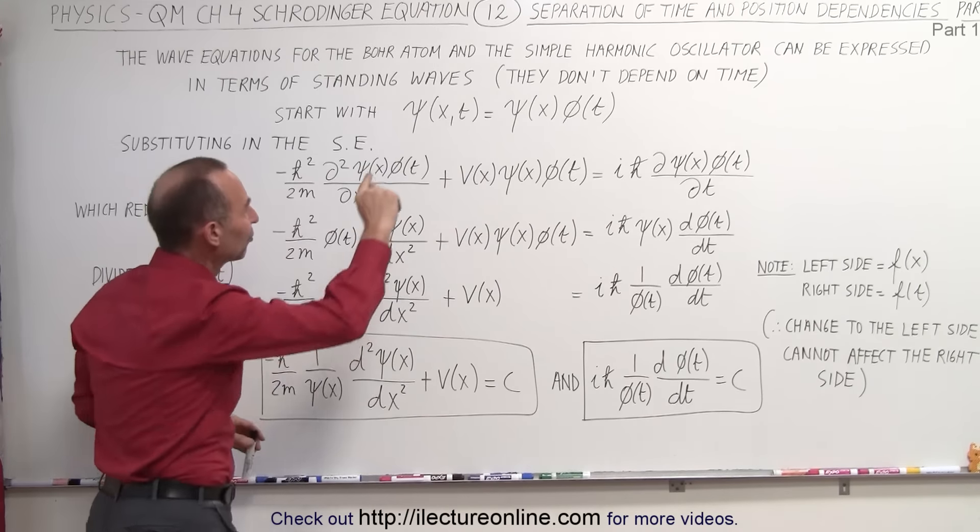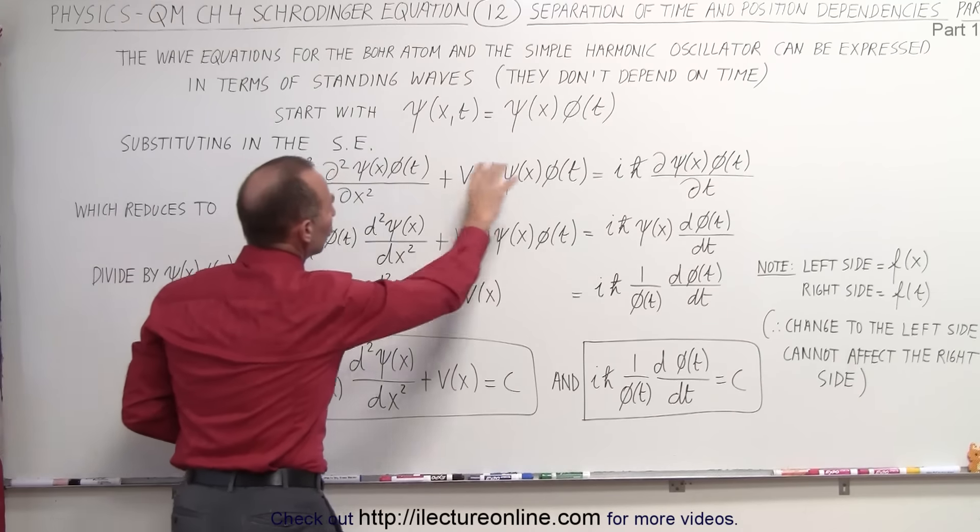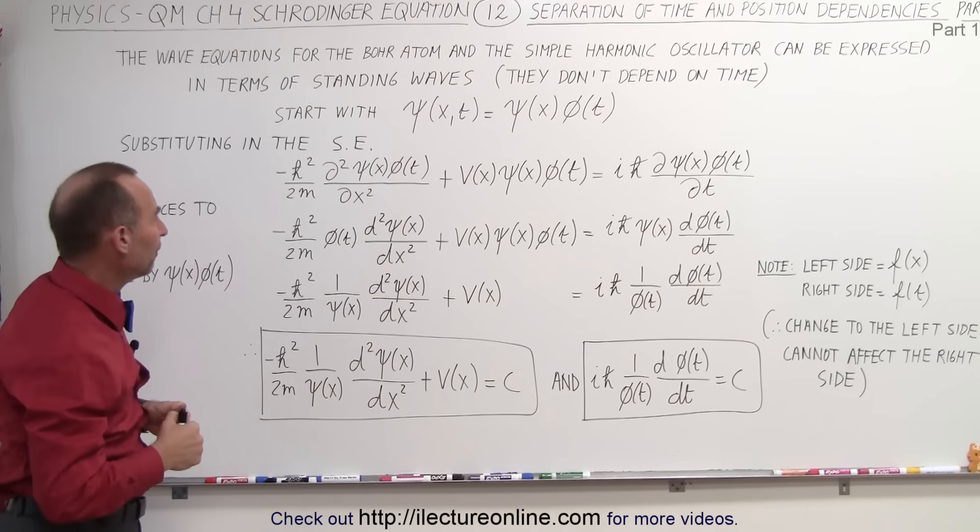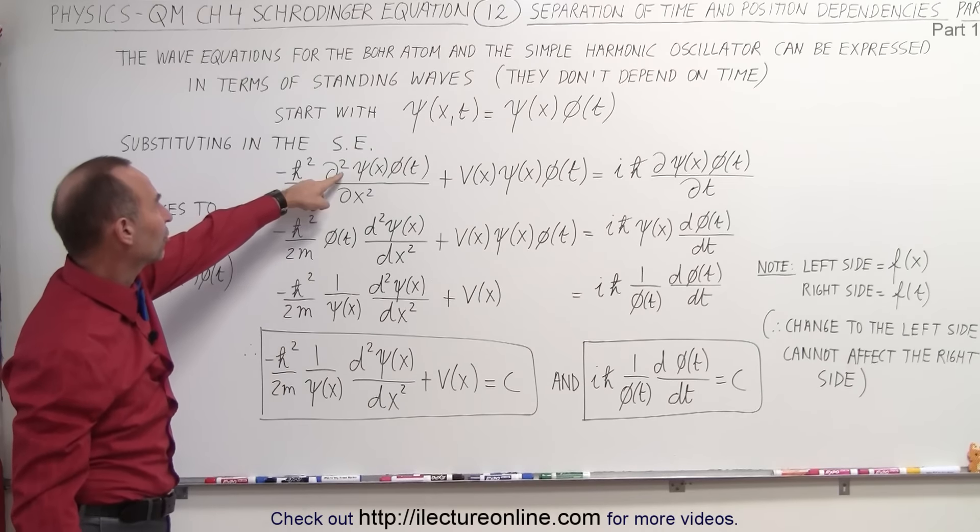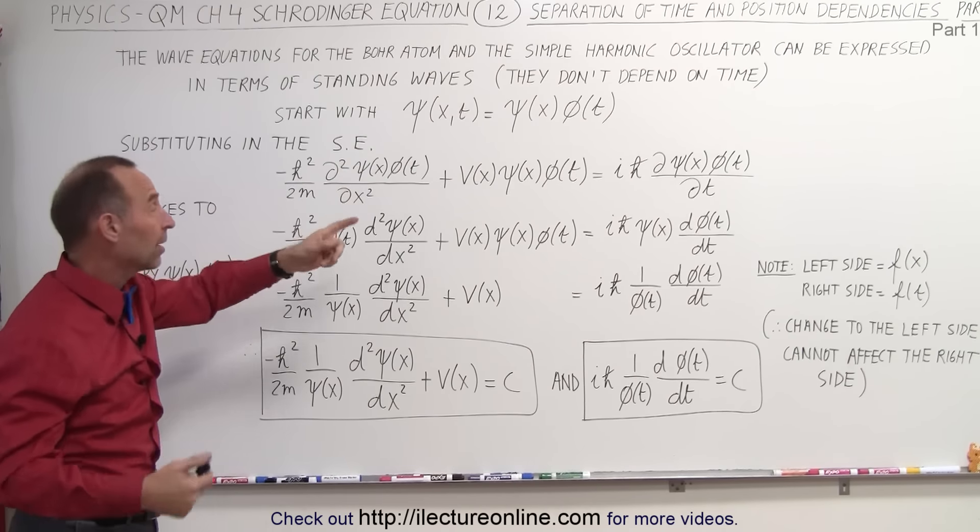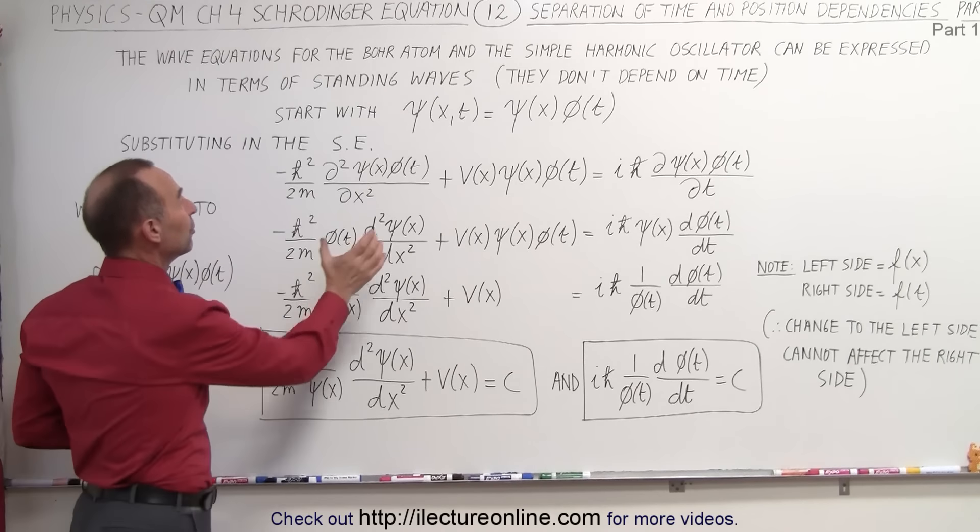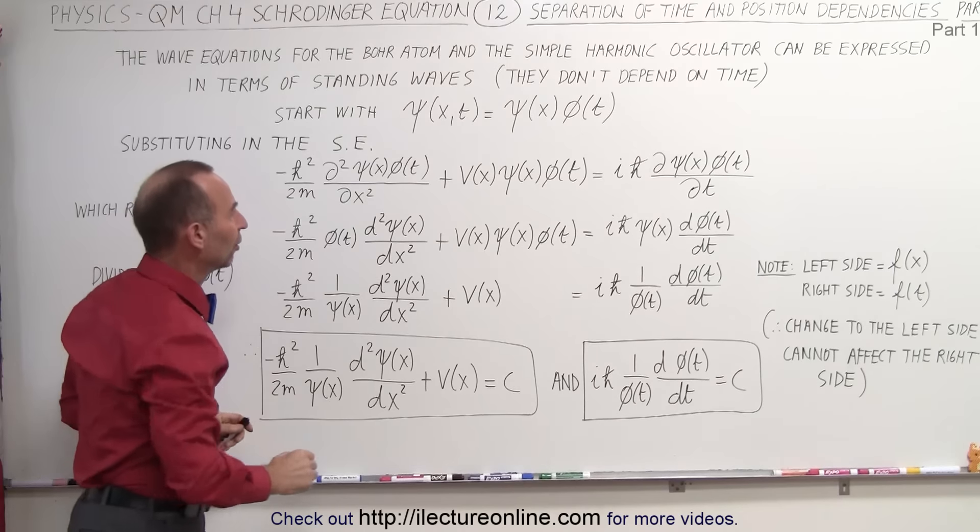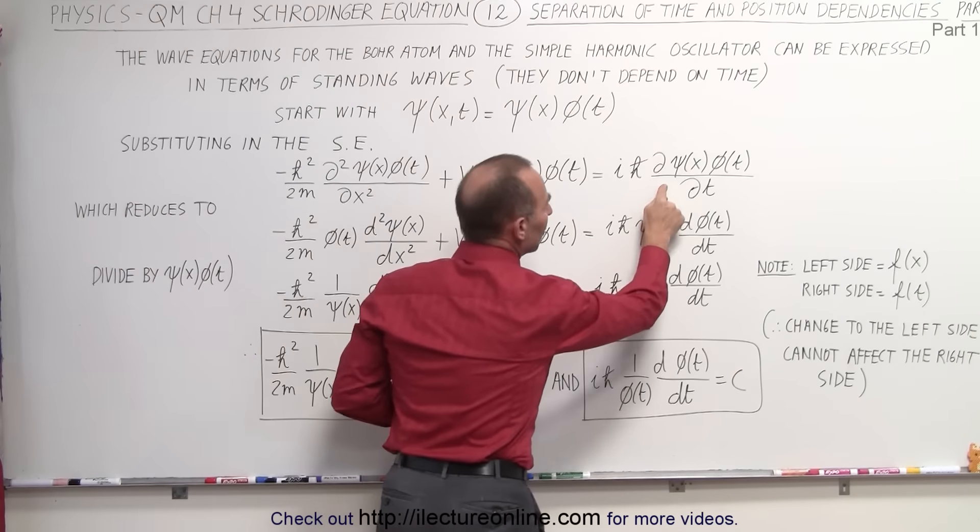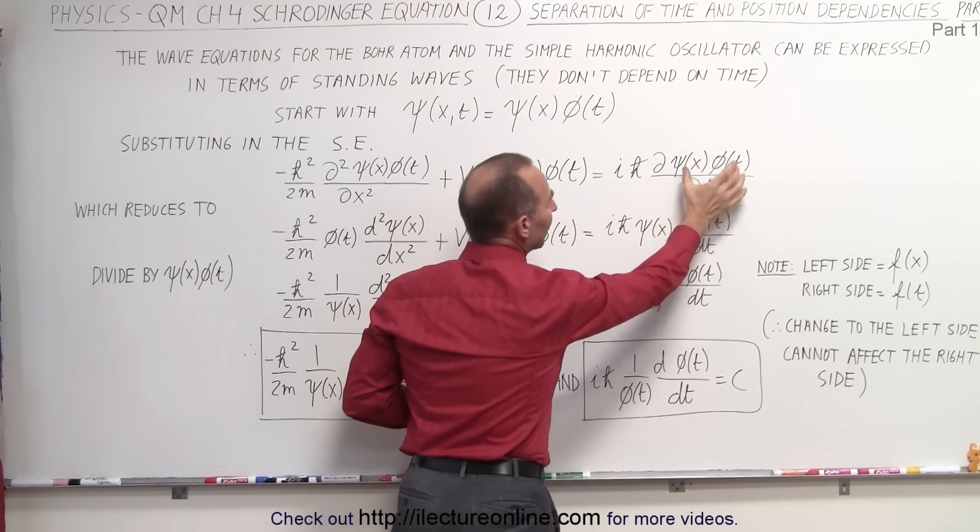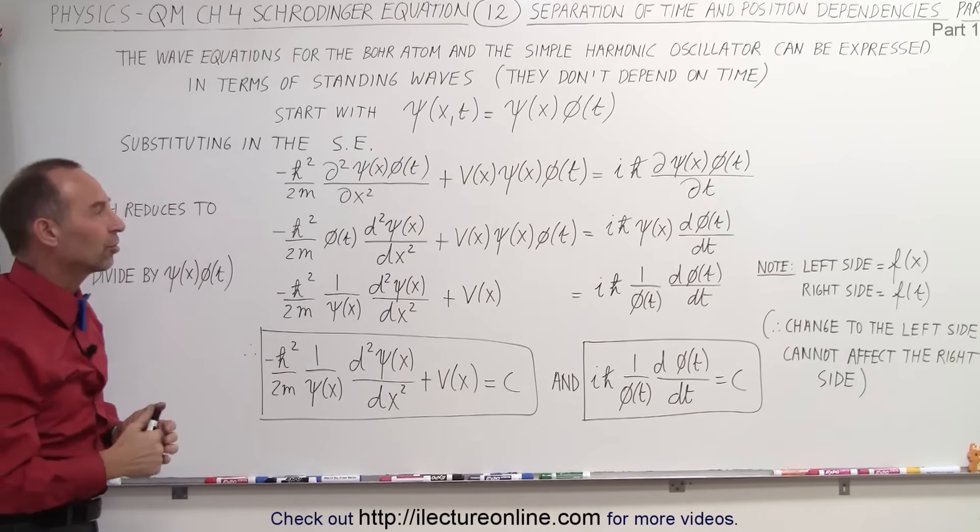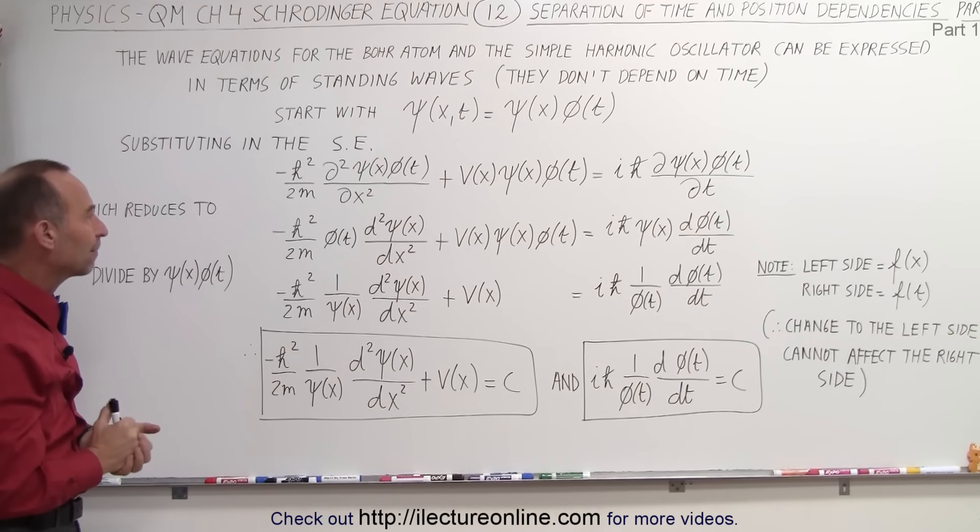We then take that and substitute that back into the original Schrödinger equation that we worked with before. So instead of taking the partial second derivative with respect to x-squared of the function that is dependent on x and time, it's now going to be a product of two functions. Same with the potential energy term, and same when we take the partial with respect to time. Again, it's going to be of that product rather than the single wave function that depends on position and time combined.